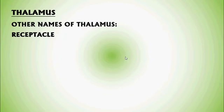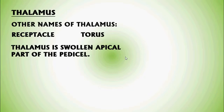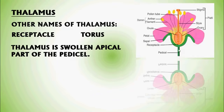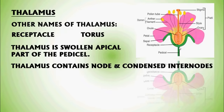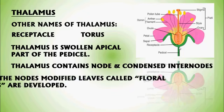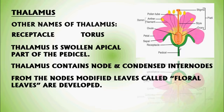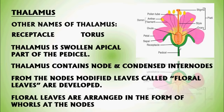Thalamus — other names are Receptacle and Torus. Thalamus is defined as the swollen apical part of the Pedicel. In the photograph, the swollen portion of the apical region is called Thalamus. Thalamus contains nodes and condensed internodes. From the nodes, modified leaves called Floral leaves or Floral parts are developed and are arranged in the form of whorls at the nodes.